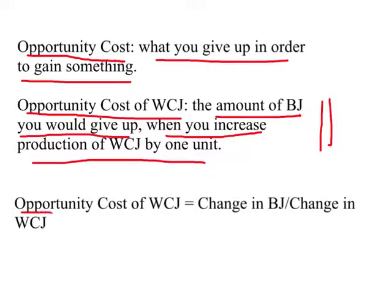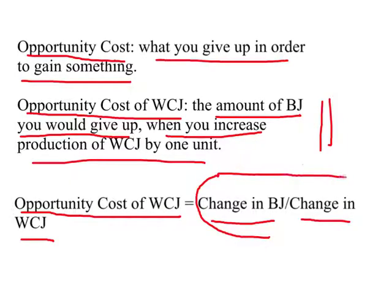We can measure opportunity cost of Western cut jeans precisely. It is: change in baggy jeans divided by change in Western cut jeans. This ratio represents by how many units we have to reduce production of baggy jeans when production of Western cut jeans increases by one unit — which you may recognize from our earlier discussion of slope in mathematics.